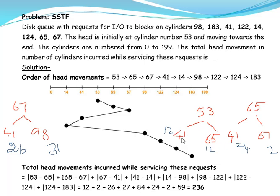This means that both 41 and 65 are equally close to 53 — there is a tie. We said we have to break the tie in the direction of head movement. Since the head is moving towards the end, it is moving from 53 towards 199. Therefore, we decide to move to 65 instead of 41.